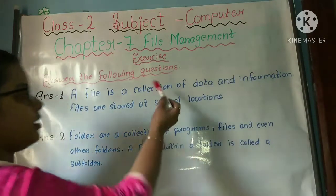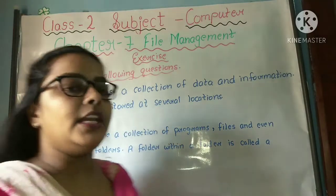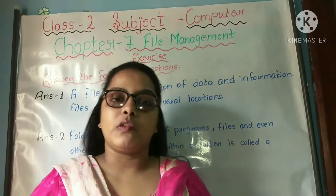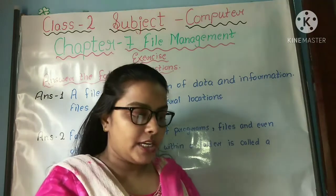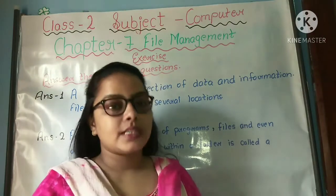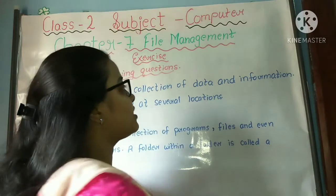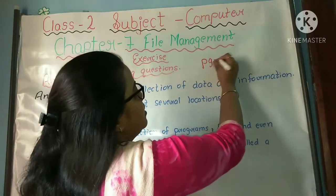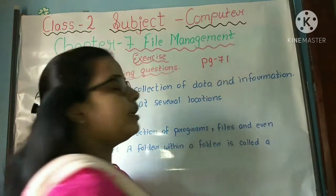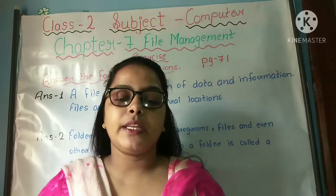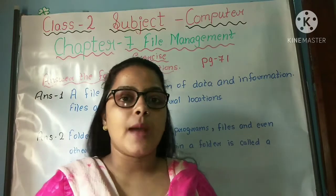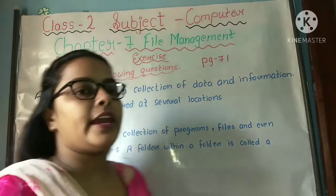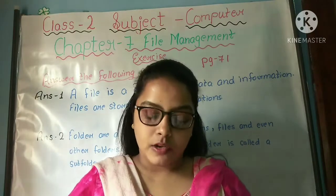So these two questions — what do you have to do? Learn and write. Page number 71. This is given on the board. Learn and write — you have to write in your book.